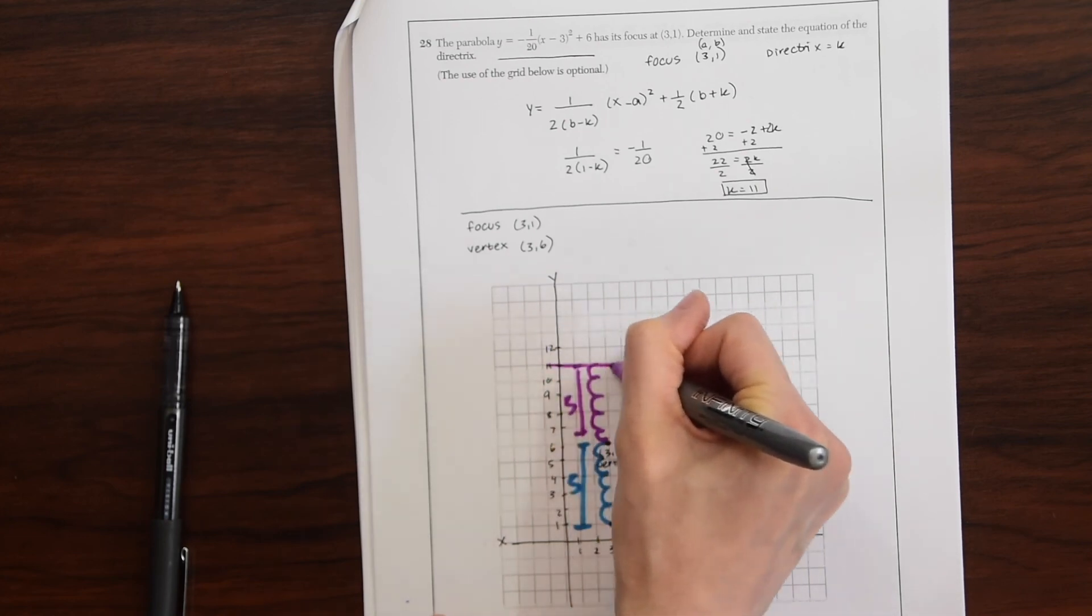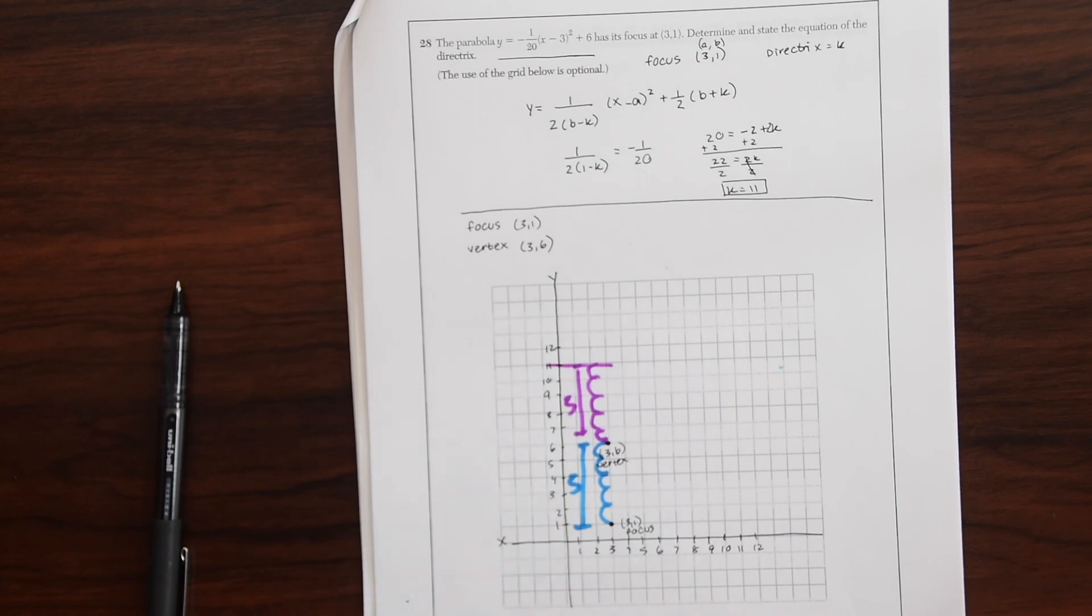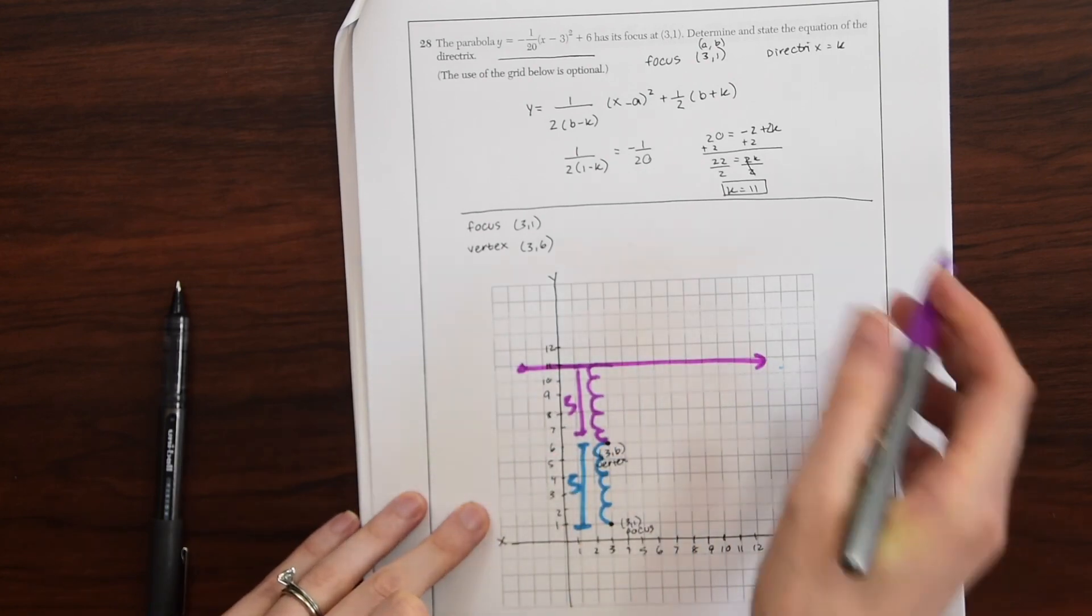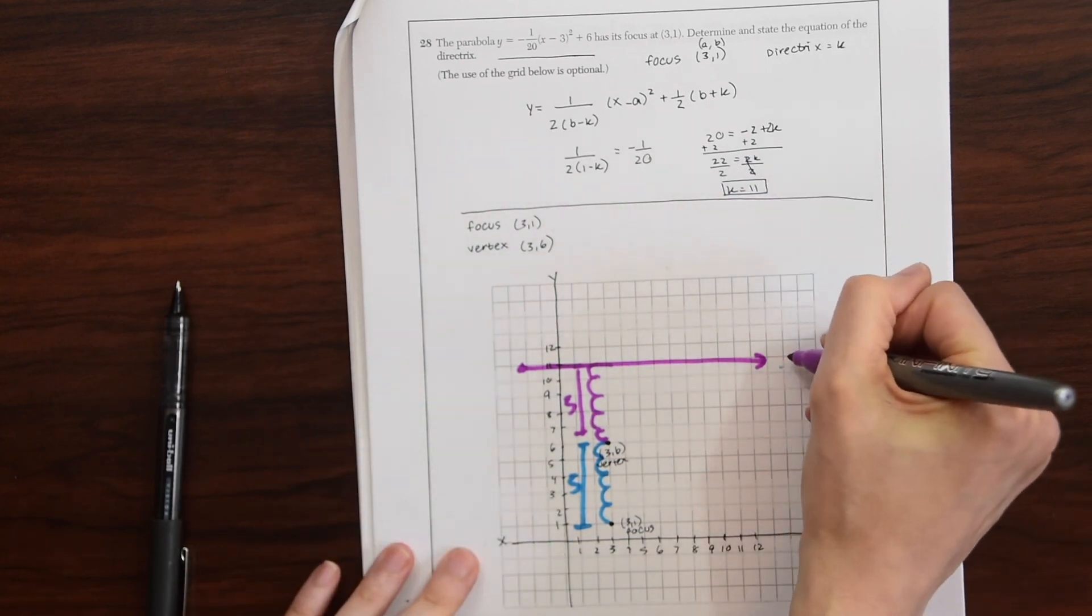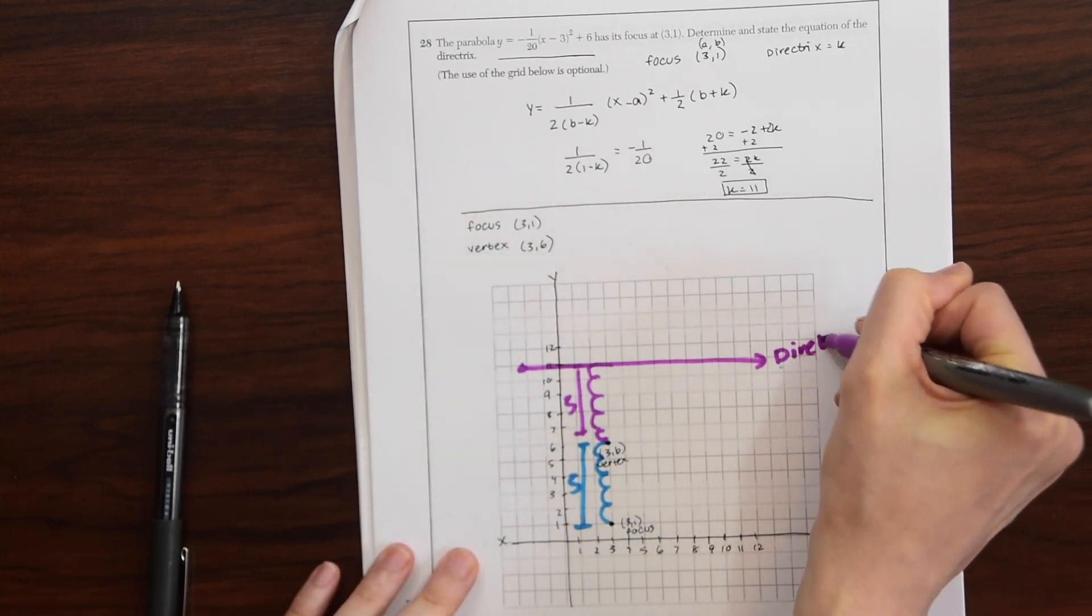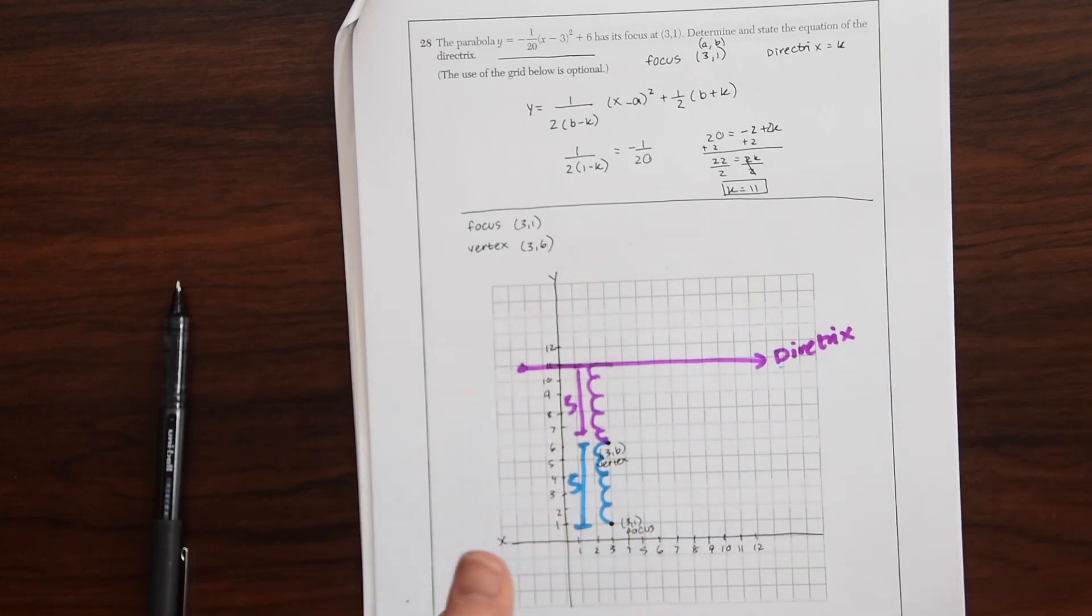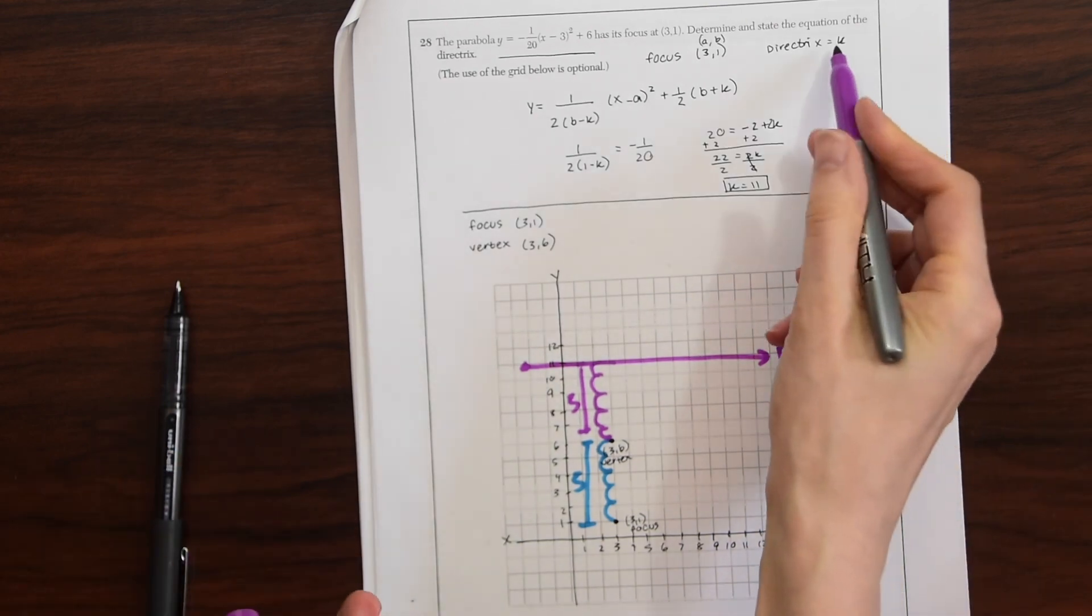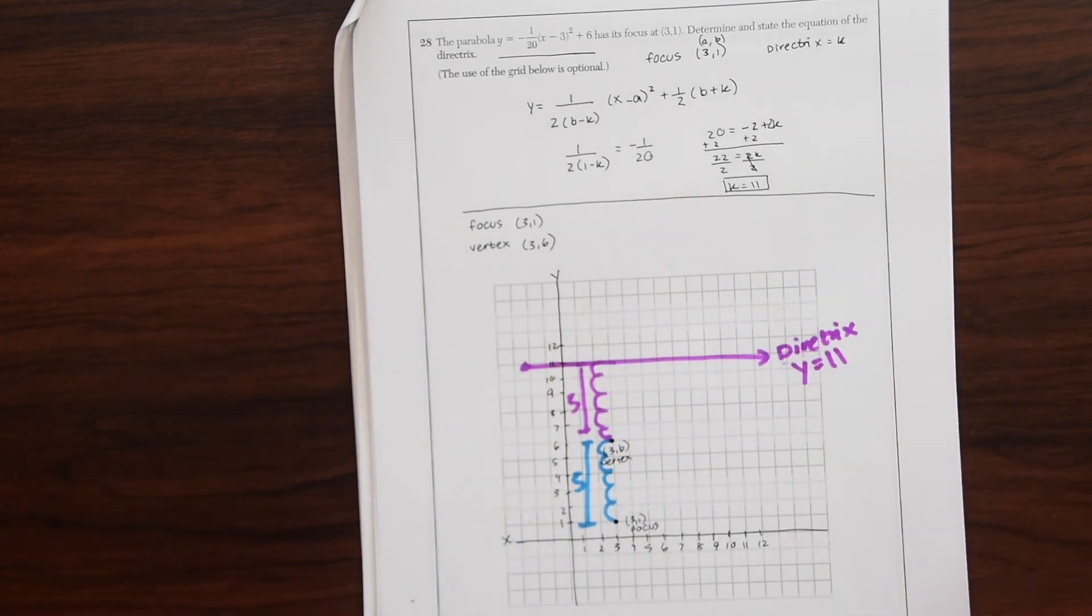And you can see that it lines up with y equals 11, which is the directrix, which is the same thing we got algebraically over here. So we have directrix, y equals 11, or k equals 11, because it's also denoted as k. And that's our answer.